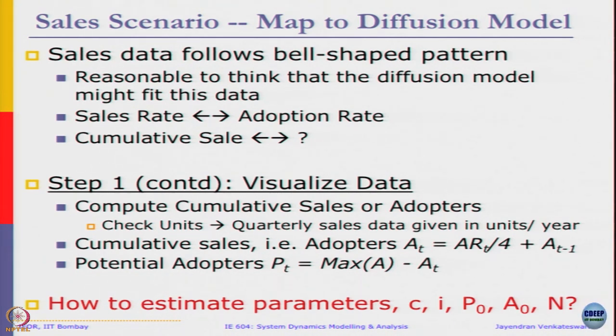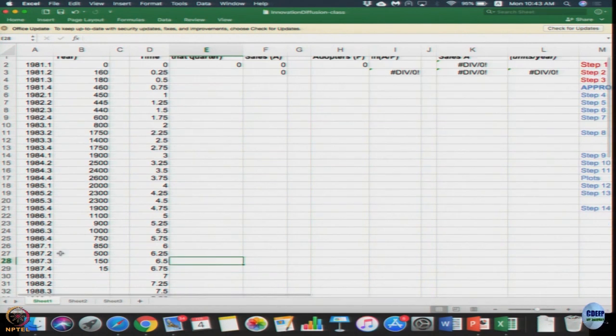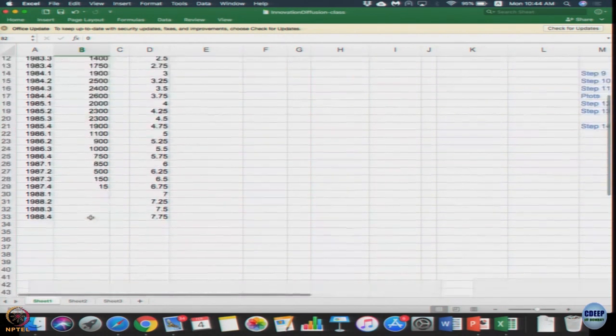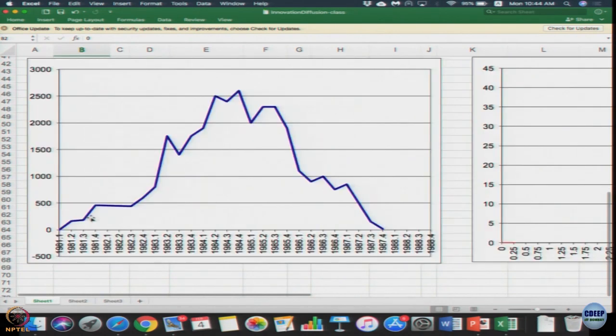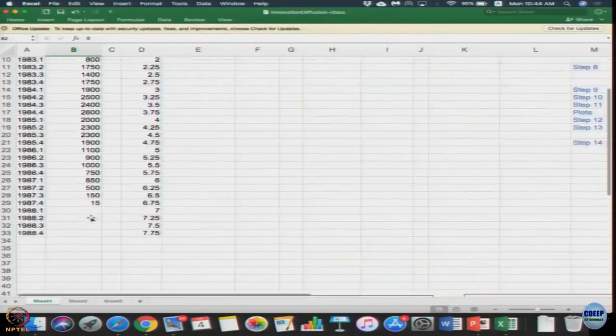For that, I urge you to download the Excel file and open it. The data whatever we saw is given. Column B is given to you, and based on column B if you scroll down, the graph is also plotted which is nothing but the sales rate. We have plotted those two values right here. Nothing else to do, just observe what is there in the field.